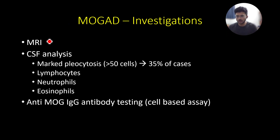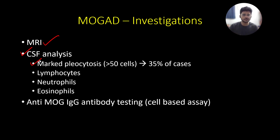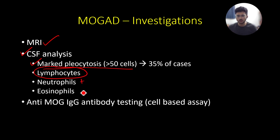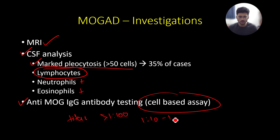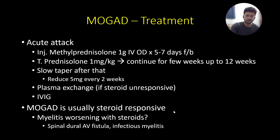Regarding investigations: MRI patterns have already been discussed. For CSF analysis, unlike multiple sclerosis, around 35 percent of MOGAD patients will have marked pleocytosis of more than 50 cells — mostly lymphocytes, but neutrophils and eosinophils can also be present. Anti-MOG antibodies must be done by cell-based assay, and it's important to check the titers: clear-cut positivity is more than 1:100, while 1:10 to 1:100 is considered low positive.